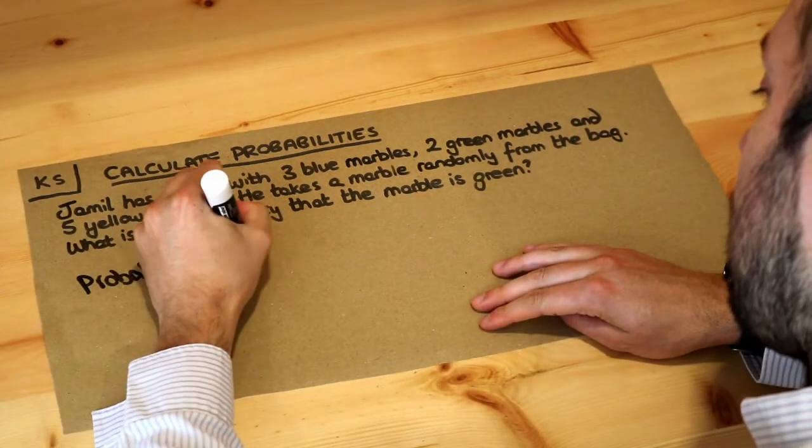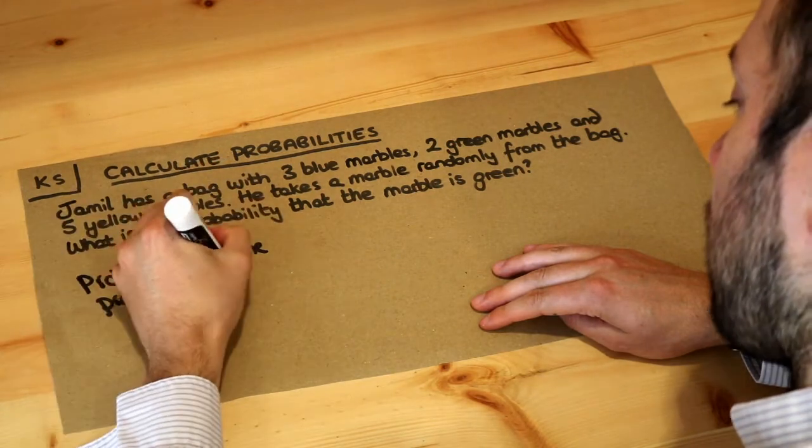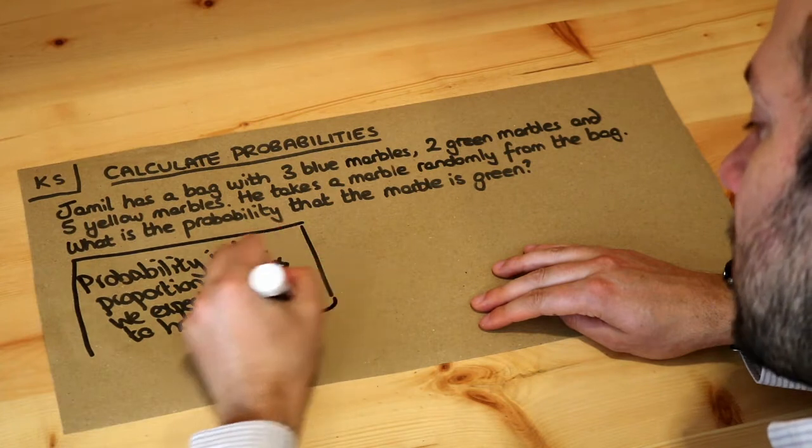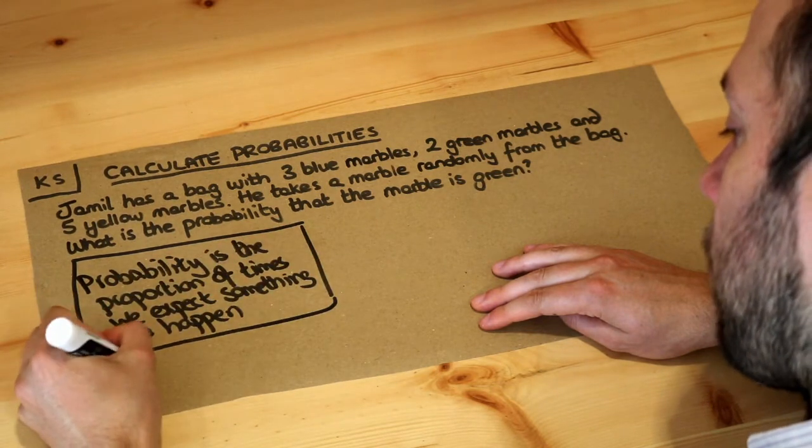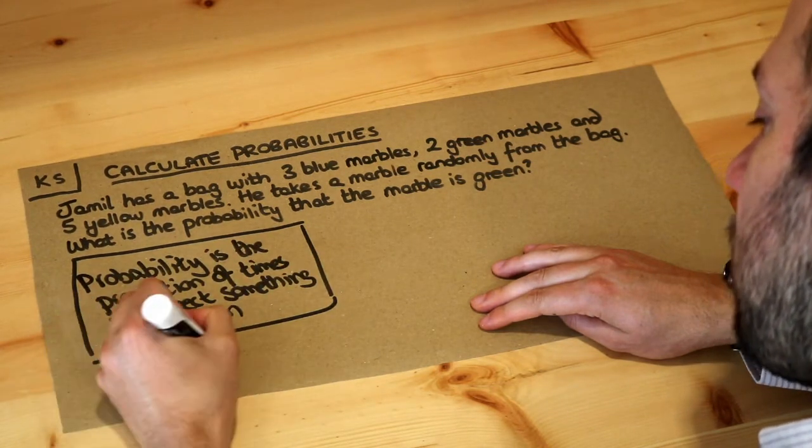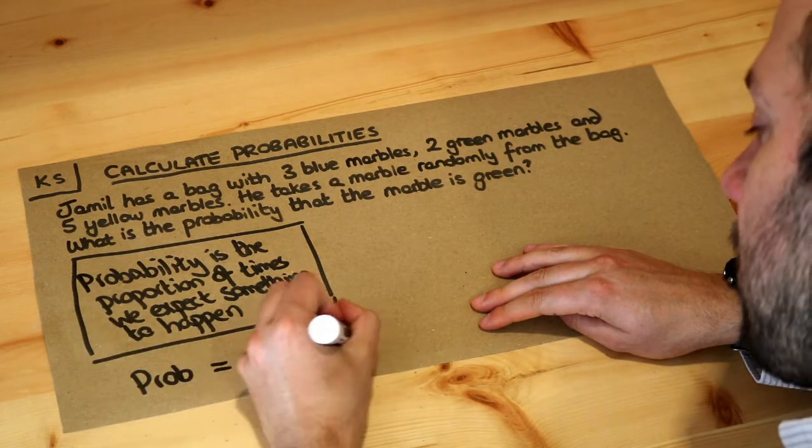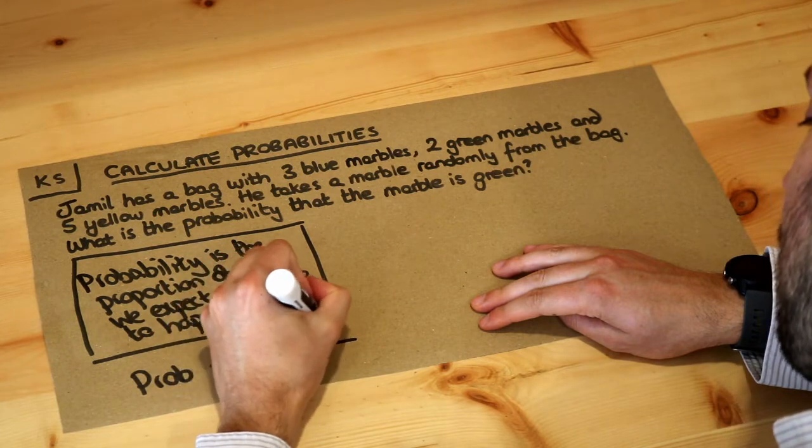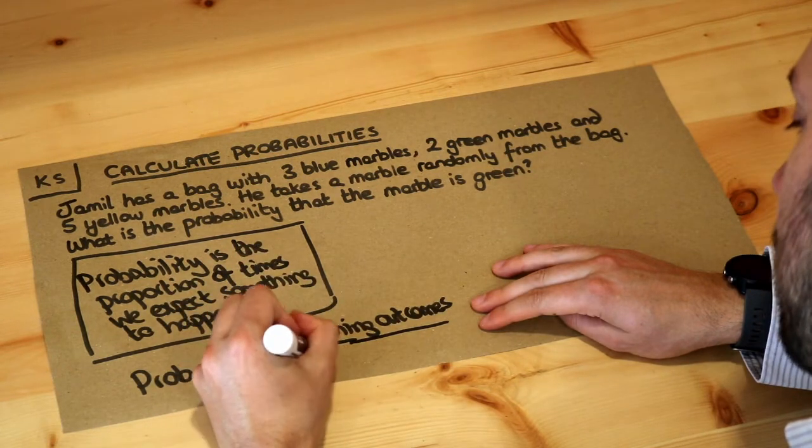So probability is the proportion of times we expect something to happen. Now the way we can work out a probability is to use this formula: the probability, or prob for short, of something happening is the total number of matching outcomes—I'll explain what I mean by that in a second—over the total number of outcomes.